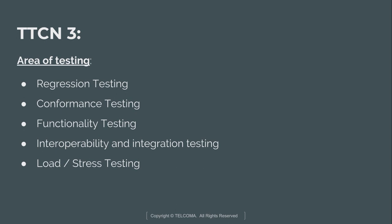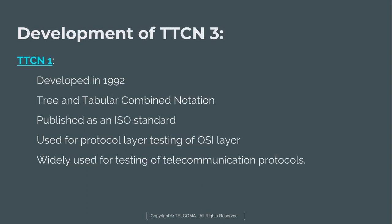These are the different testing areas of TTCN-3. Next we discuss its development history. The first version, TTCN-1, was developed in 1992, known as Tree and Tabular Combined Notation Version 1. It was published as an ISO standard and used for protocol layer testing of OSI layers, and was widely used for testing telecommunication protocols.